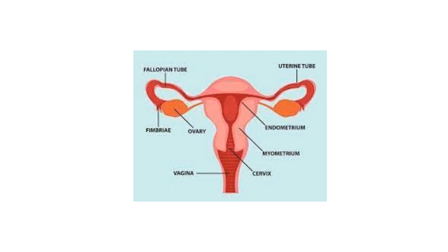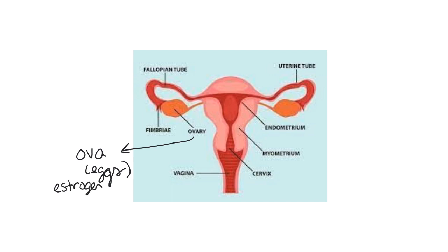We're going to start with the ovaries. The ovaries are going to produce what are called ova — ova are the eggs. So the ovaries will produce the ova. They will also produce hormones such as estrogen and progesterone. We will talk about when those hormones are produced and how they fit into the female cycle in a little bit. The ovaries are also going to contain ovarian follicles.